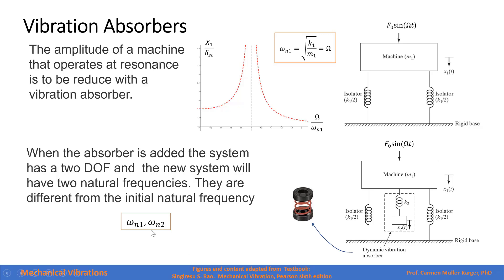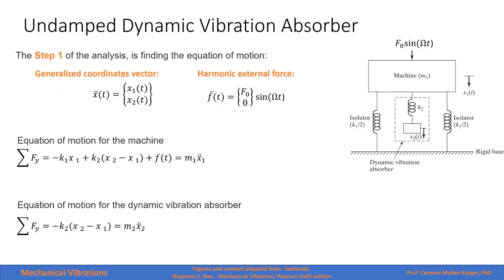These two natural frequencies are different from the original natural frequency that the system had when it was only a single degree of freedom. Step one of the analysis of an undamped dynamic vibration absorber is to find the equation of motion. We do the free body diagram of each of the two masses and add forces in the y-direction. The force of spring k2 will be the spring constant times the relative displacement between mass 1 and mass 2.